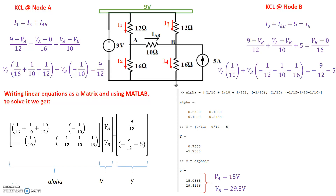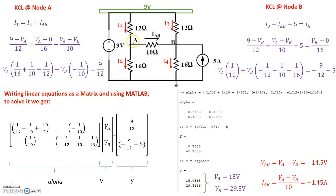We were asked for the voltage across the 10-ohm resistor and the current through it. VAB equals VA minus VB, which gives negative 14.5 volts. We don't need to worry that the voltage is negative — it simply means the current direction we assumed for IAB is opposite to the actual direction, and VB is at a higher potential than A. Similarly, IAB equals VAB divided by 10, which is negative 1.45 amps. The negative sign again just indicates the actual current flows opposite to our assumed direction.